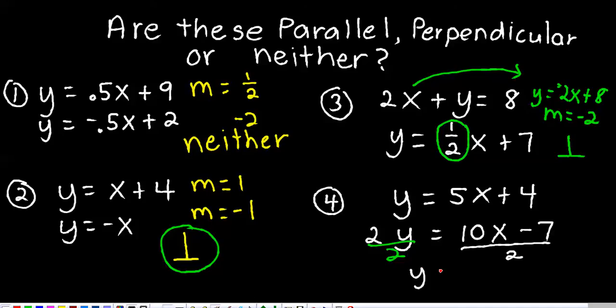So, it would end up being y equals 5x minus, well, 3.5. The y, the y-intercept doesn't really matter. What matters is you've got a 5 here, and you've got a 5 here, so they are going to be parallel.